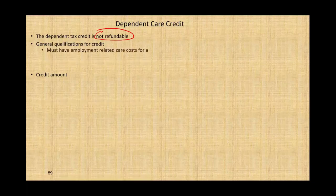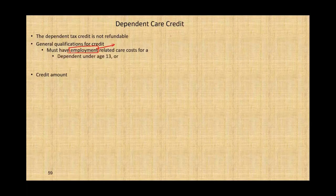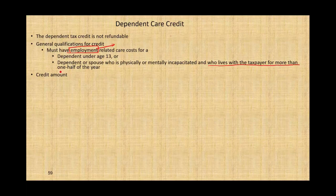General qualifications for the credit: you must have employment-related care costs — you must be employed. If one person is not working, you cannot get this credit, because if you're not working you're supposed to be taking care of your child. The qualifying individual must be under the age of 13, or a dependent or spouse who is physically or mentally incapacitated and lives with the taxpayer for more than half of the year. The credit amount is the eligible care cost times an applicable percentage.